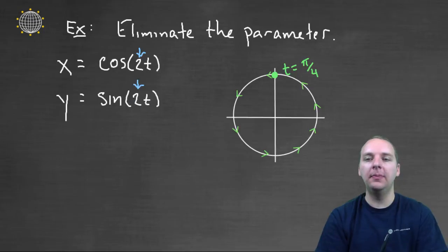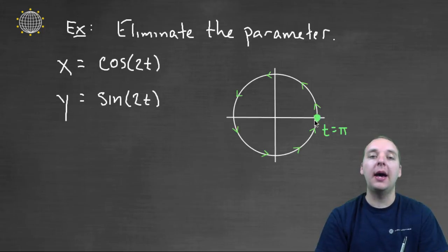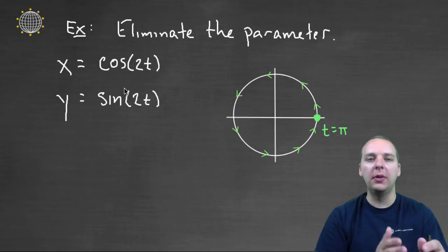and then you'd be at negative one zero for pi over two, and then zero negative one for T equals three pi over four. And then lastly, back at one zero when T is pi, because you'd have cosine of two pi and sine of two pi. So anyway, this is a parametric equation, and I'd like to write the equation of the circle without it being in parametric form. So now I know the equation of a circle, but how do we get from here to there?